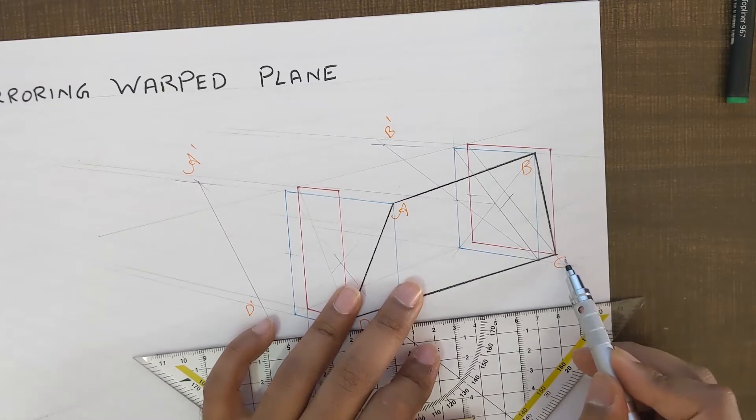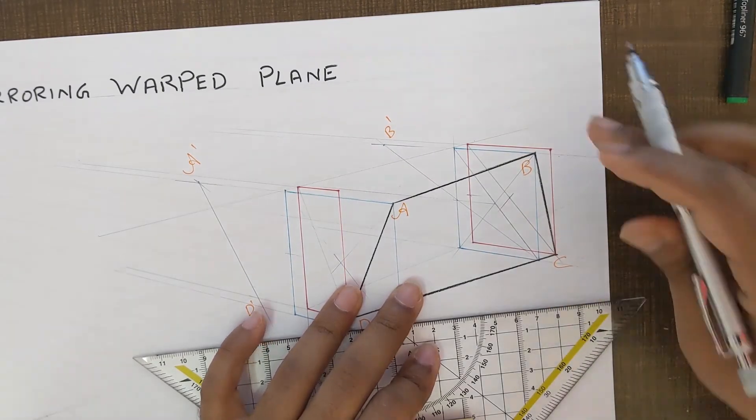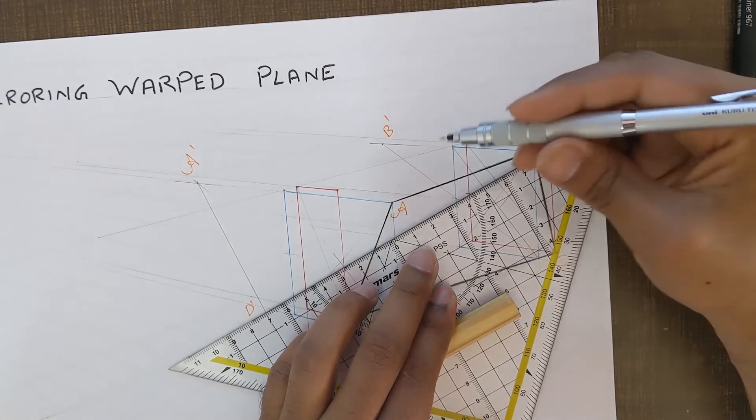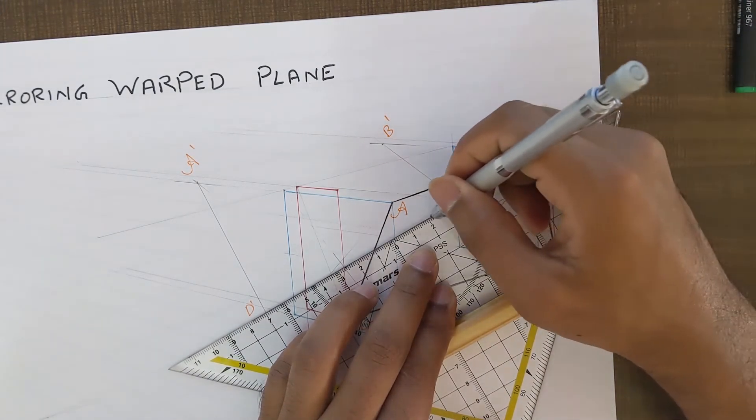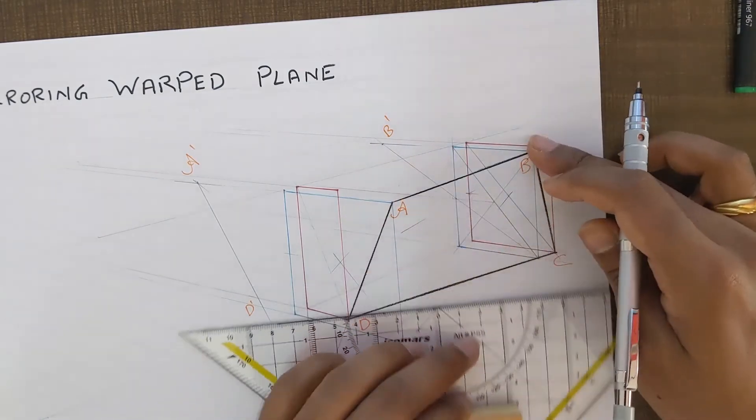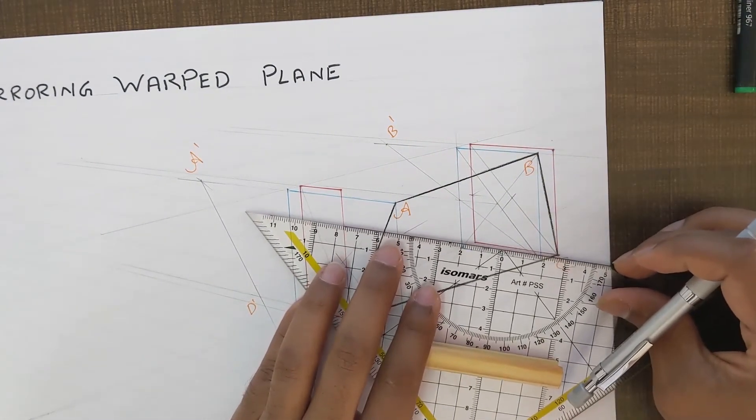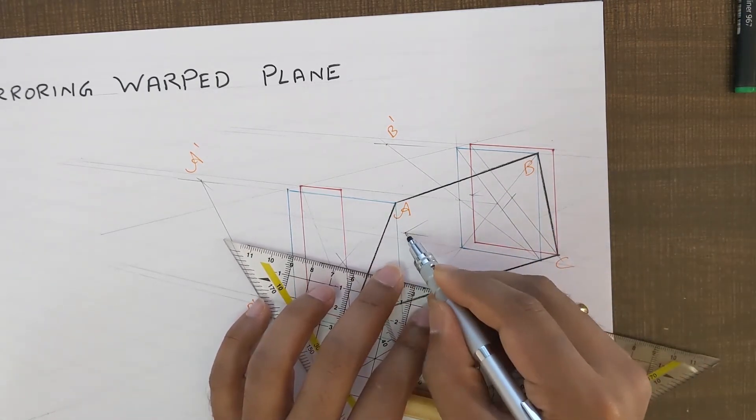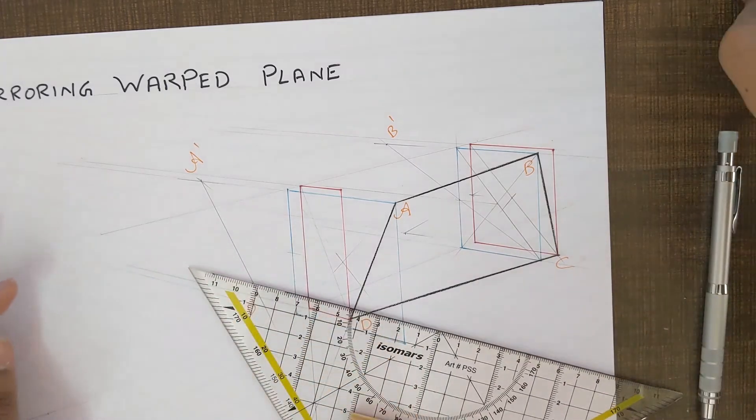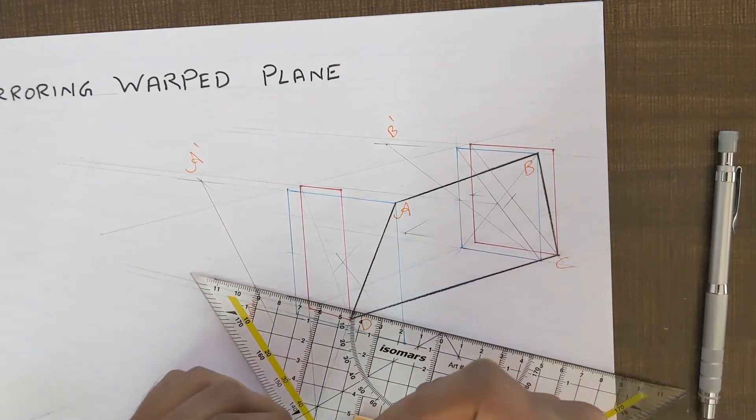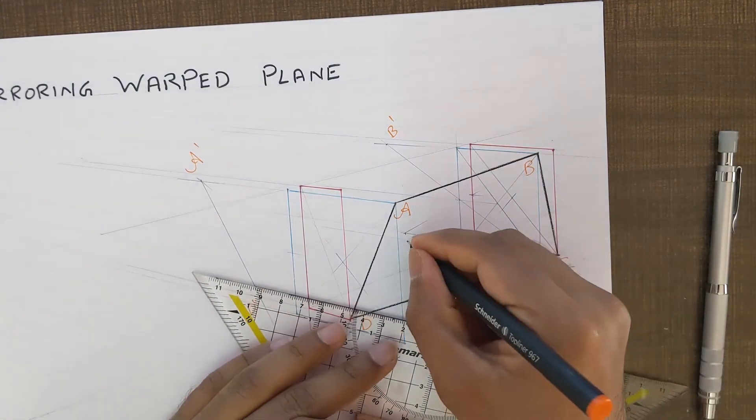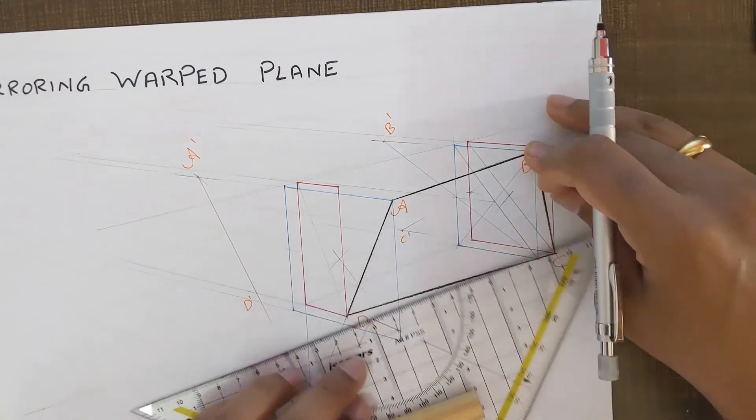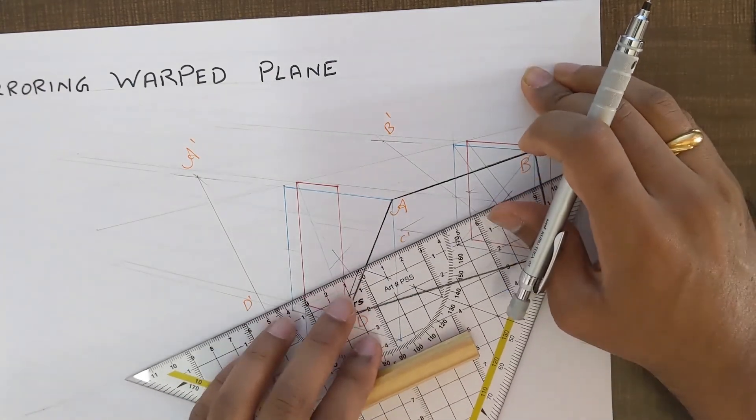Now take the point C, go up along the red color line, and through the corner just draw a line intersecting through the center point. And where this line intersects with the extended line from the bottom of the rectangle is your point C dash. Now all that is remaining is just connect these lines or these dots.